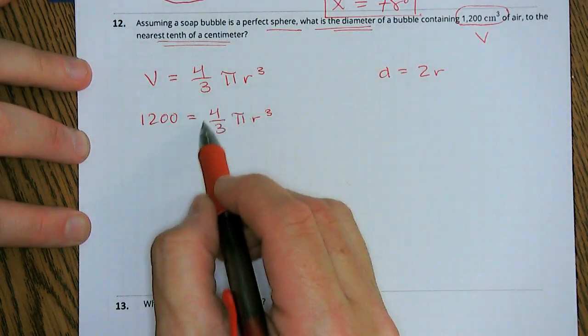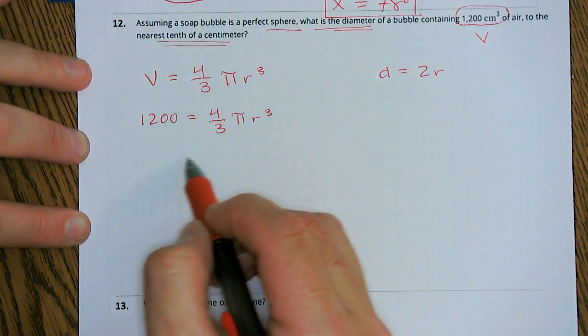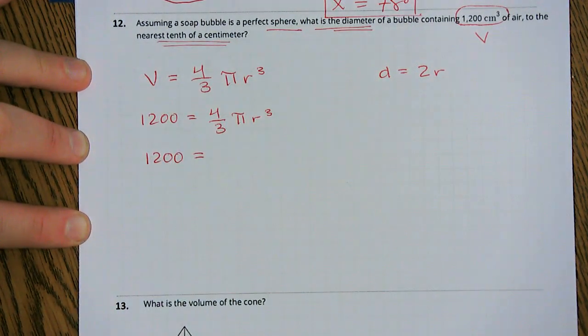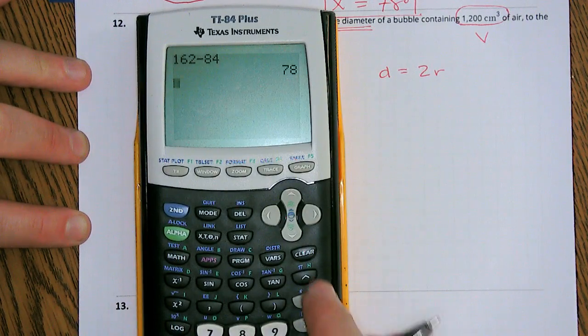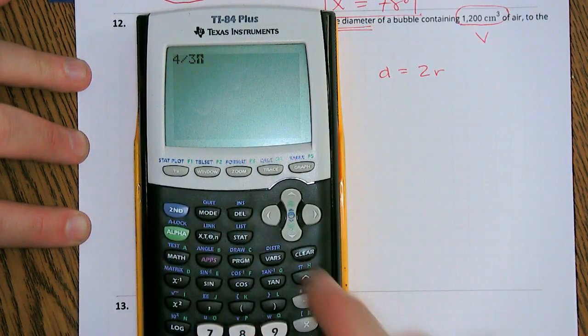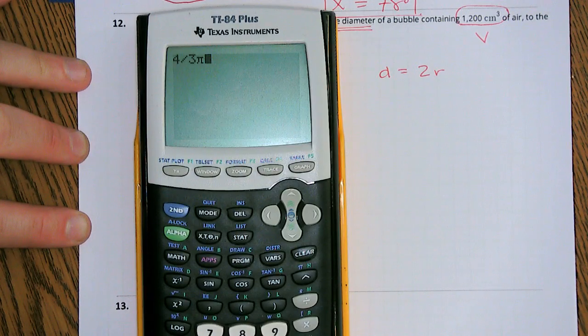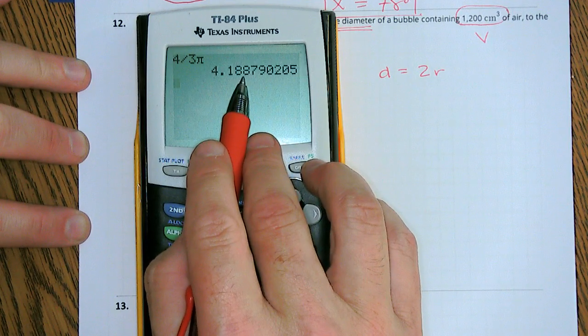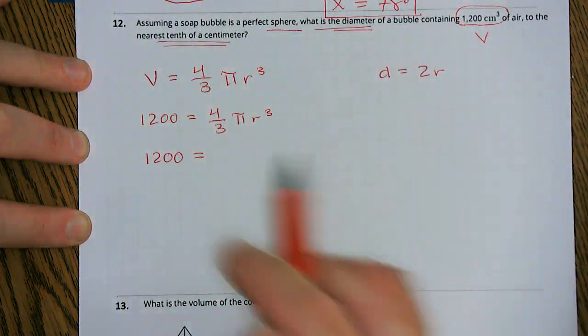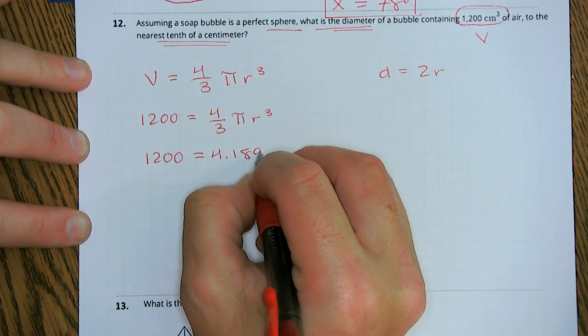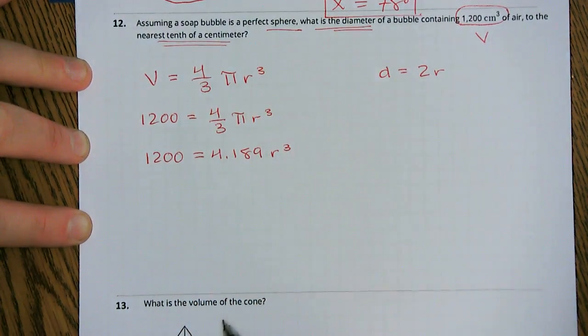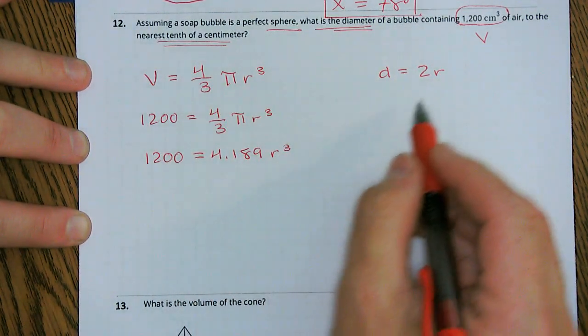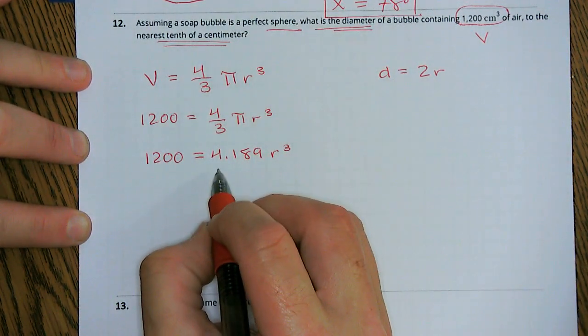Now, our strategy here is we're going to evaluate the numbers first and then divide that on the other side. So let's just say 1,200 equals, and we have four-thirds pi. So four-thirds pi. We're looking at approximately 4.189 r cubed.